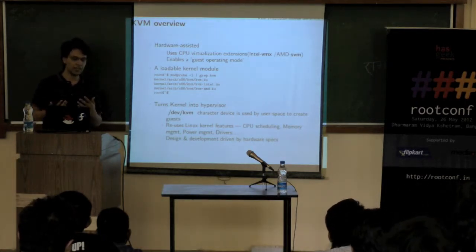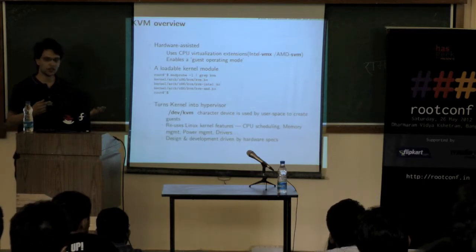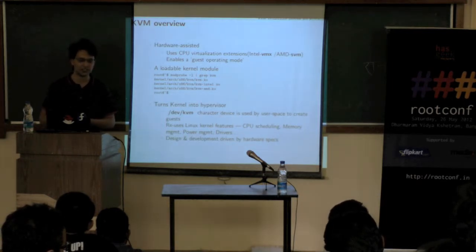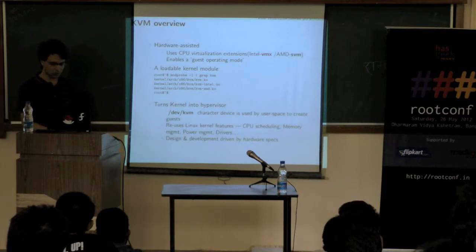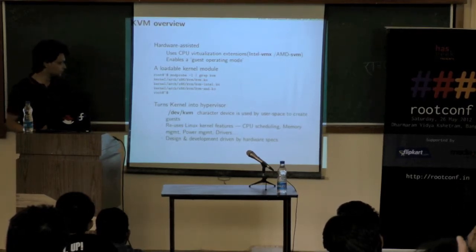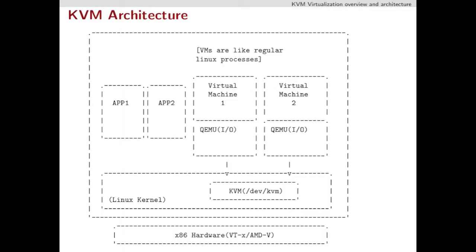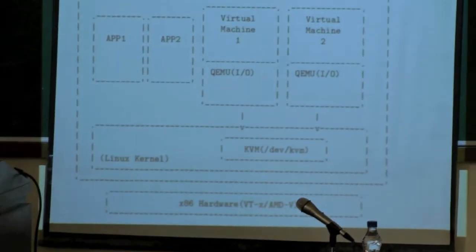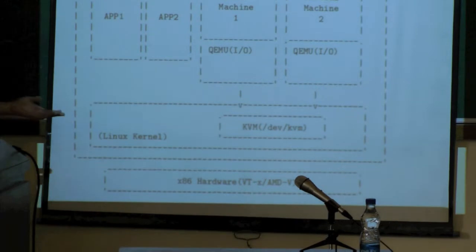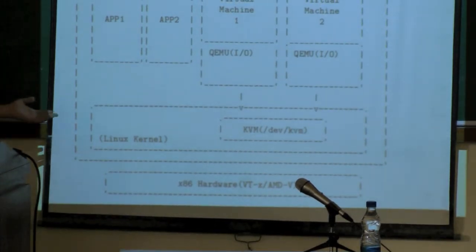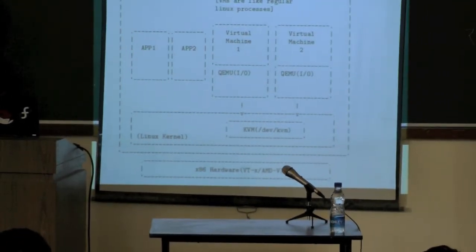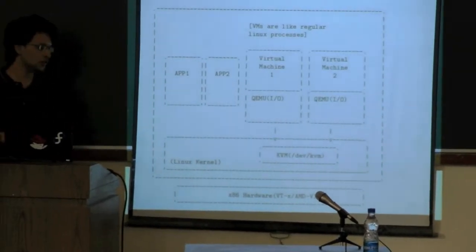KVM's design and development is driven by hardware specifications. Intel and AMD bring innovations: VT-x is the CPU virtualization extension, VT-c is for connectivity and network I/O virtualization, also done by the PCI group. At the bottom of the stack is x86 hardware supporting virtualization extensions, either Intel or AMD, and on top is the Linux kernel running KVM, which puts the CPU into guest mode to run instructions natively.